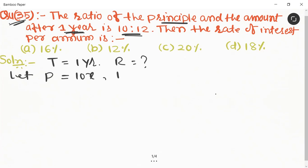We know that the formula of interest is equal to A minus P, so I is equal to 12x minus 10x equal to 2x. We know that the formula of rate is equal to I into 100 upon P into T.